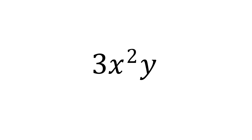If, for example, the constant is 1, we omit writing it. So an expression like x squared y is also a monomial whose constant is 1.